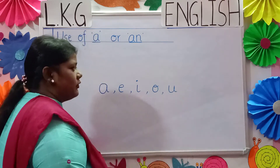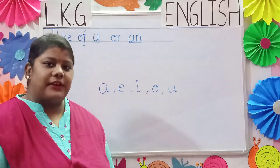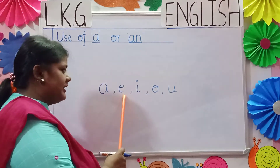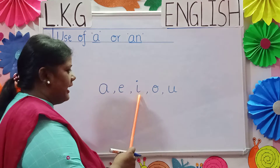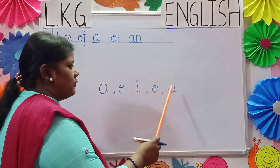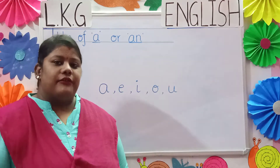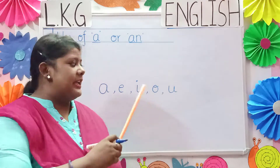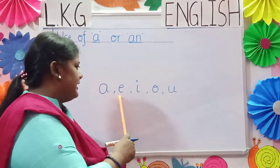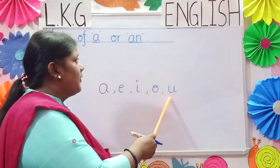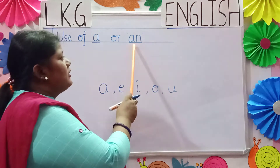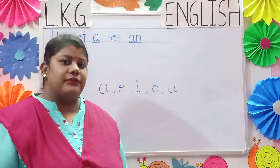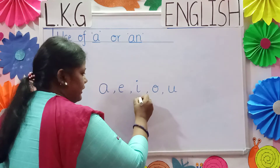Very good. There are five vowels: A, E, I, O, U. Now children, whenever a word starts with A, E, I, O, U, we use 'an' before it. What do we use? We use 'an' before it.